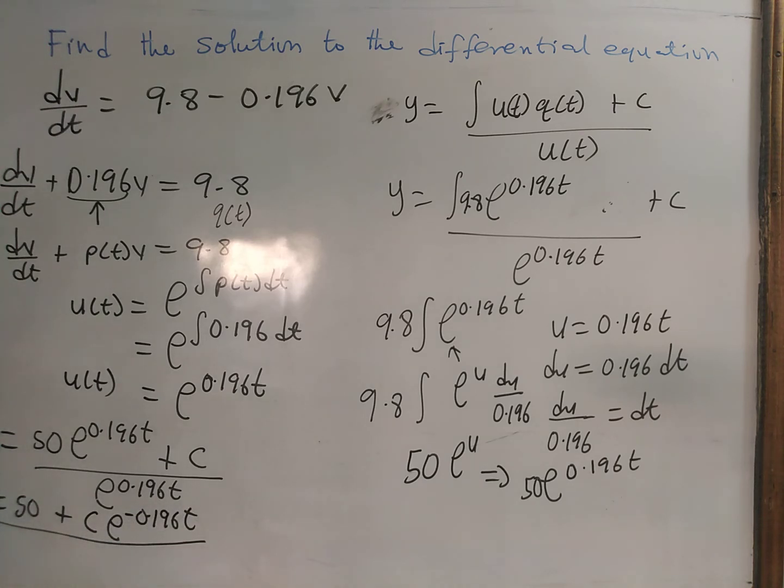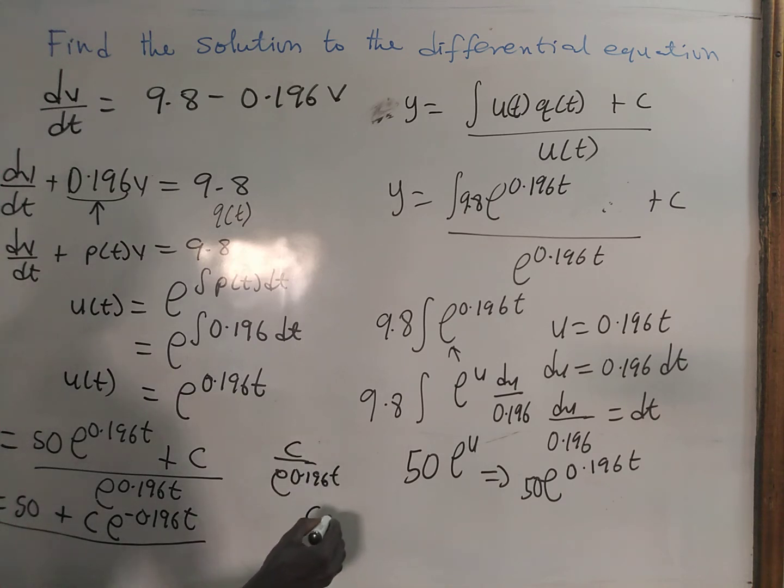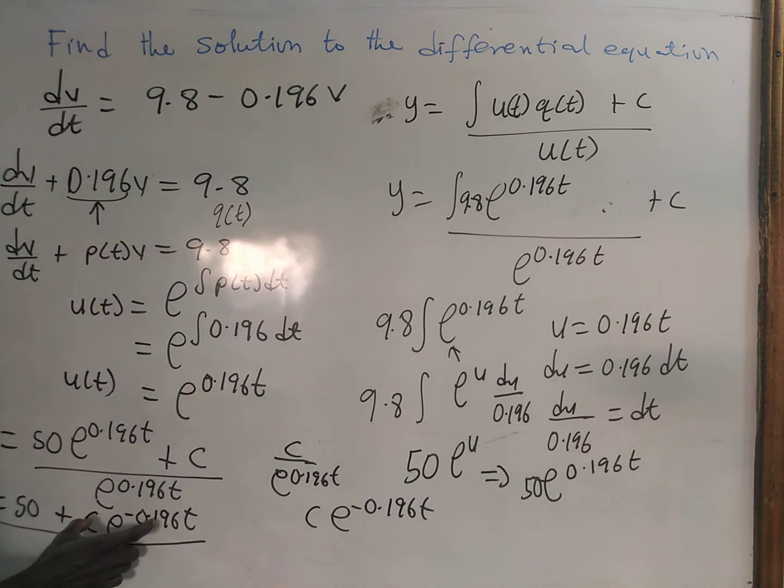Check how this was done. If we divide here, c divided by e to the power 0.196t gives c times e to the power negative 0.196t. You can leave your answer here without coming downwards.